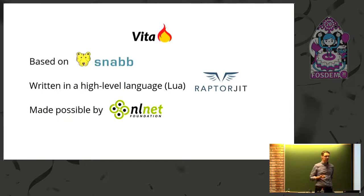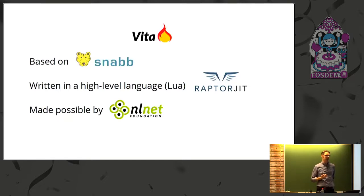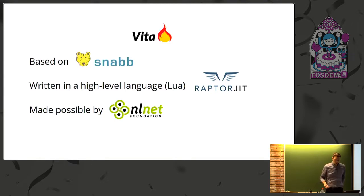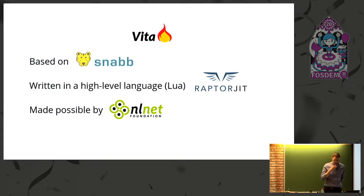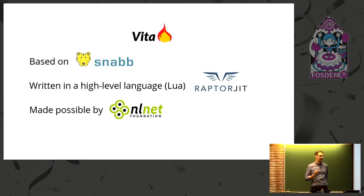Vita is based on Snap. Snap is a toolkit for writing fast networking applications in user space. This mode of operation is also referred to as kernel bypass mode — basically it means the data path completely avoids the Linux kernel.